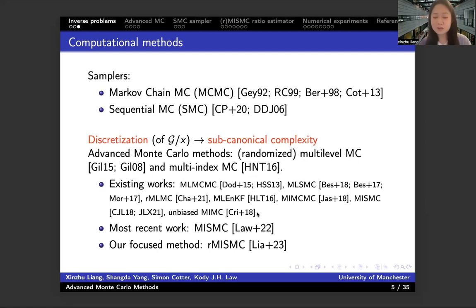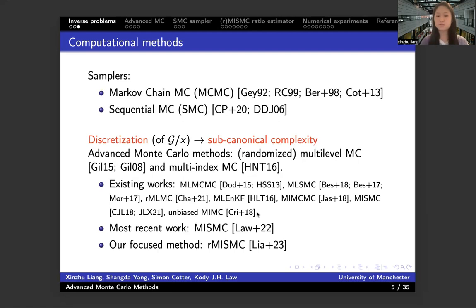The algorithm is called the Randomized Multi-Index Sequential Monte Carlo (RMISMC) ratio estimator. Don't worry — it just has three main components: the randomized multi-index method, the sequential Monte Carlo sampler, and the ratio estimator. We will explain these three components gradually through this talk.